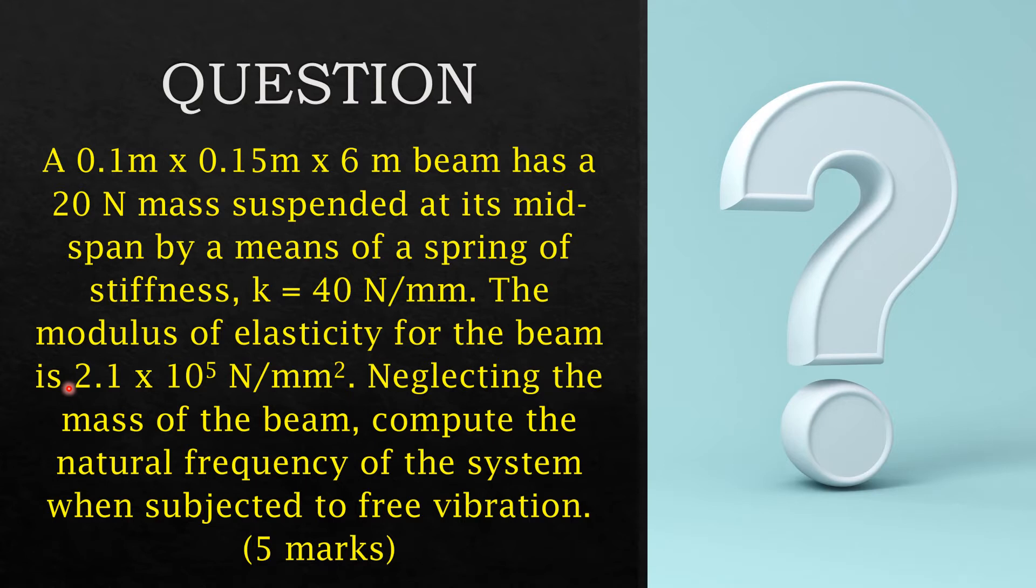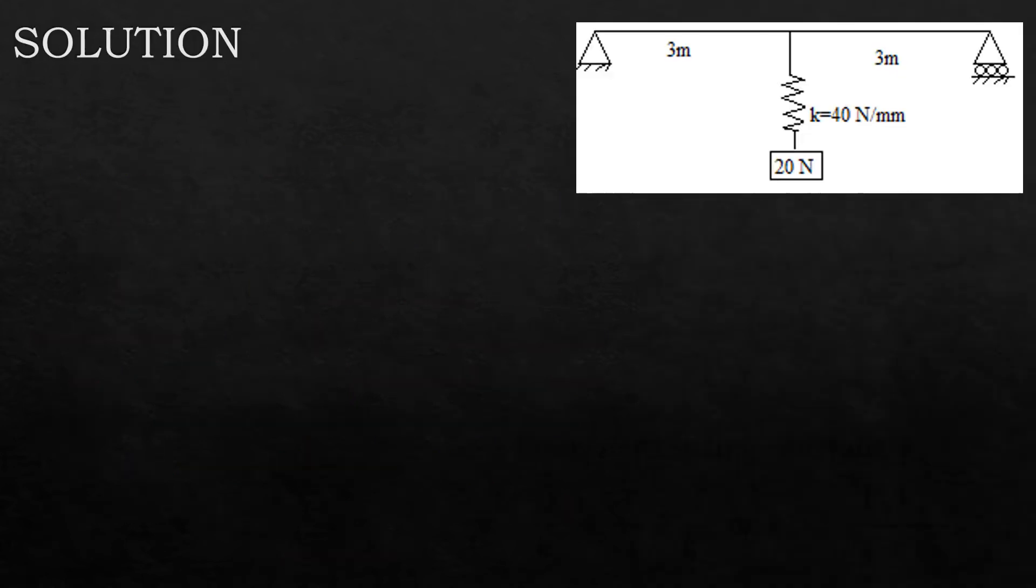A very simple problem. Let's see the steps for solving this. First, always visualize your problem. You're given a beam six meters, at the mid-span there is a spring suspending a mass of 20 Newtons, and the spring by means of a stiffness of 40 Newtons per millimeter.